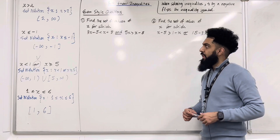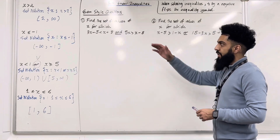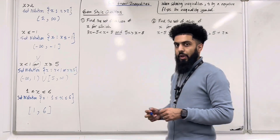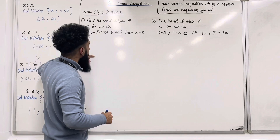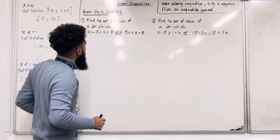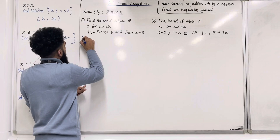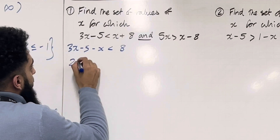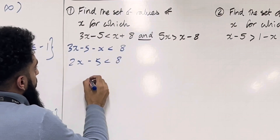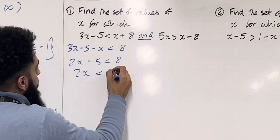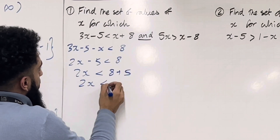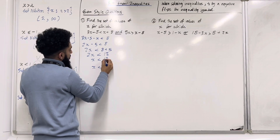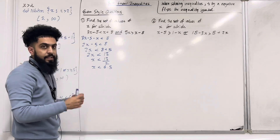Here are some exam-style questions. Question 1: find the set of values of X for which 3X minus 5 is less than X plus 8, and 5X is greater than X minus 8. I'll solve each inequality separately. For the first: 3X minus X minus 5 is less than 8, giving 2X is less than 13, so X is less than 13 over 2, which is 6.5.